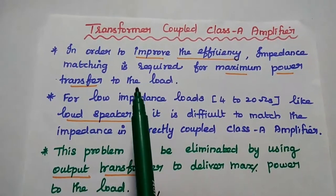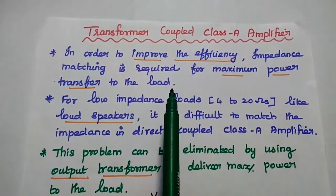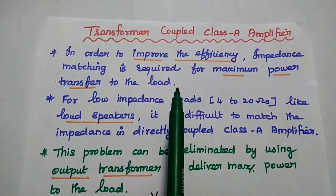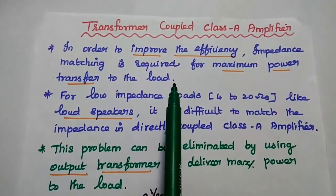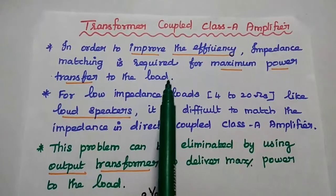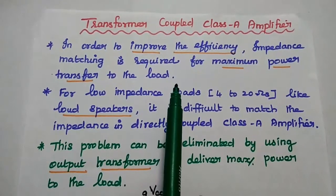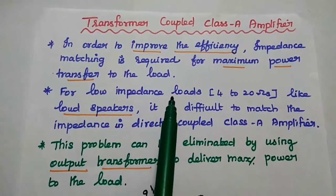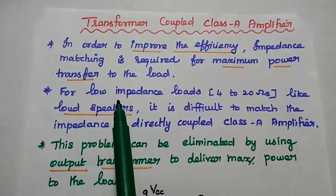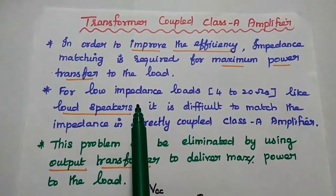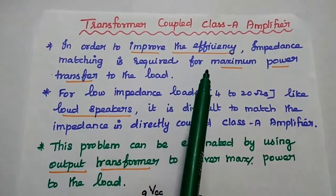Now we are going to discuss transformer coupled Class A amplifier. Let's start with the disadvantages of directly coupled Class A amplifier. The directly coupled Class A amplifier provides poor efficiency and it cannot be used for low impedance loads, especially for loudspeakers. In order to overcome the drawbacks of directly coupled Class A amplifier, we are using this transformer coupled Class A amplifier.